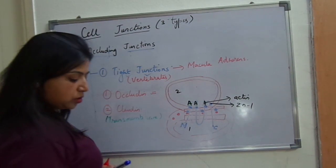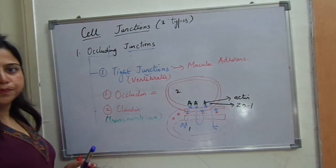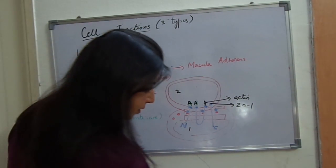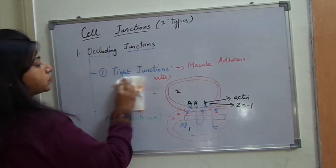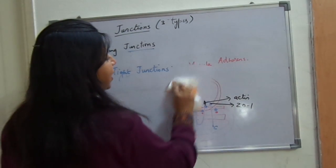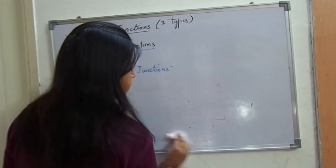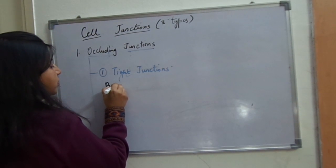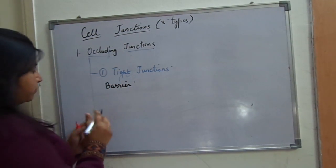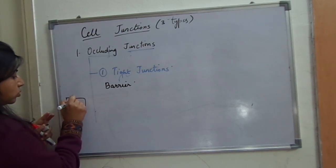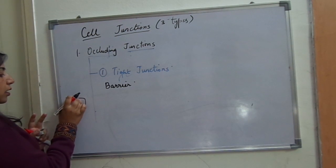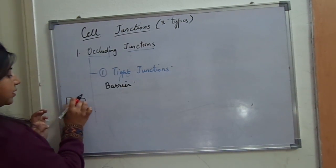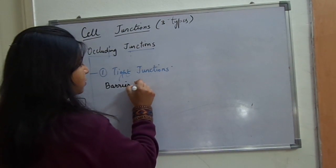This type of junction is known as tight junction. Now, what is the need of having such a tight junction within two cells? This type of junction helps in maintenance of a barrier within two cells. The two cells can be distinguished from each other, and it maintains the barrier between them. Barriers have two functions.